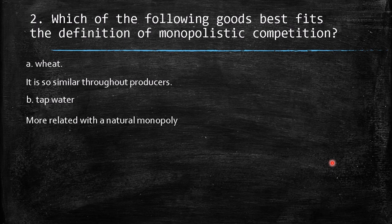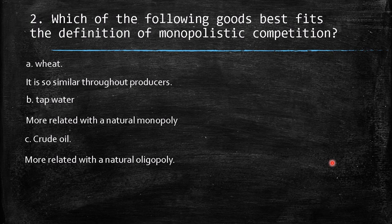Tap water is more related to a natural monopoly because usually there is just one provider, due to lack of infrastructure and administrative difficulties in creating more producers. Crude oil relates more to an oligopoly — there are few producers and many consumers, and crude oil from one firm to another is basically the same good.